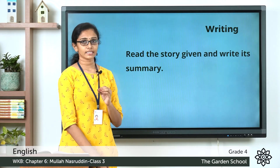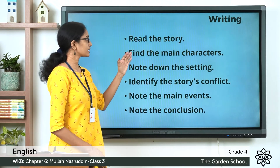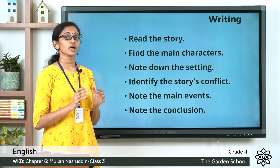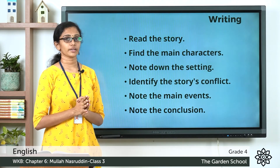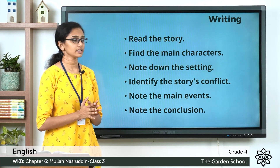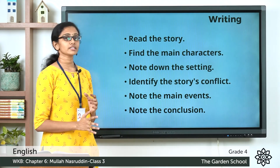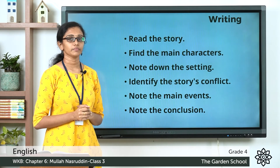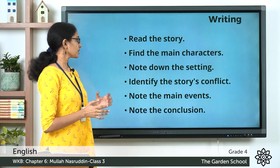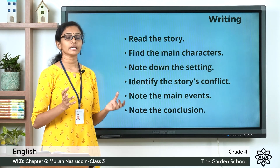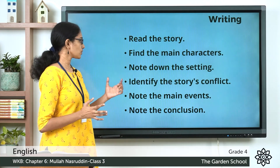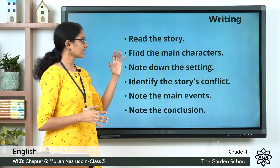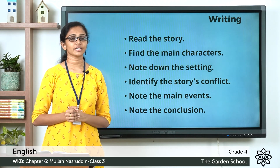When you write a summary of a story, take care of a few things. First, read the story carefully and note down the main characters. Note down the setting — where the story is taking place. Then identify the story's conflict — what the characters have to overcome. Note down the main events in the story, and finally note down the conclusion. I hope these guidelines will help you write the summary effectively.